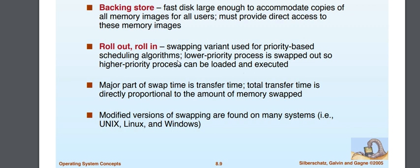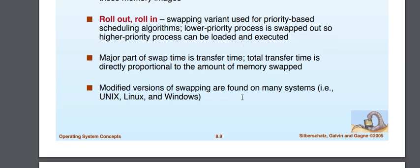Roll-out and roll-in is a swapping variant based on priority. Higher priority processes are executed first; lower priority processes are rolled out. The major part of swap time is transfer time, and total transfer time is directly proportional to the amount of memory swapped. This swapping mechanism is used in Unix, Linux, and Windows.